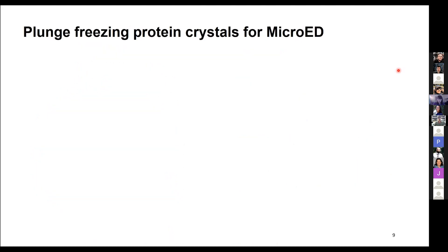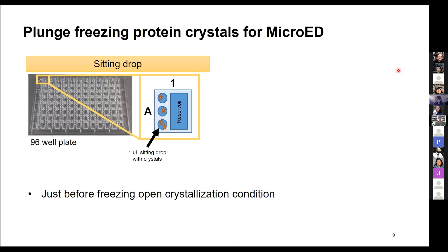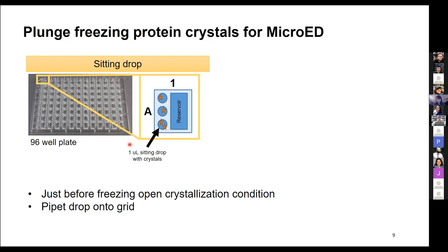For a microED experiment, you start with a crystal screen condition — for example, a 96-well plate which might have come out of a high-throughput crystallography screen. You want to open the drop just before you're freezing. We use the same workflow as cryo-EM: pipette the sample onto a grid, then plunge-freeze it using really any method you want. In our lab we've used Vitrobots, Leicas, and a manual plunger similar to the one the Lander Lab uses — it all works. We'll take the sitting drop, pick up the whole drop and pipette it onto the grid, or mix it with solution from the reservoir or some buffer, then blot and plunge-freeze.